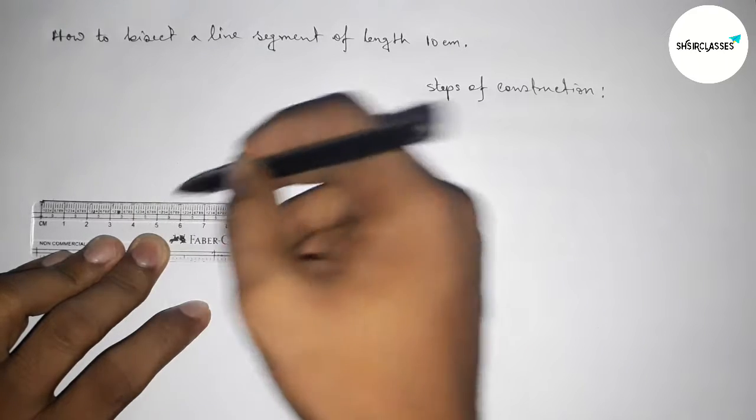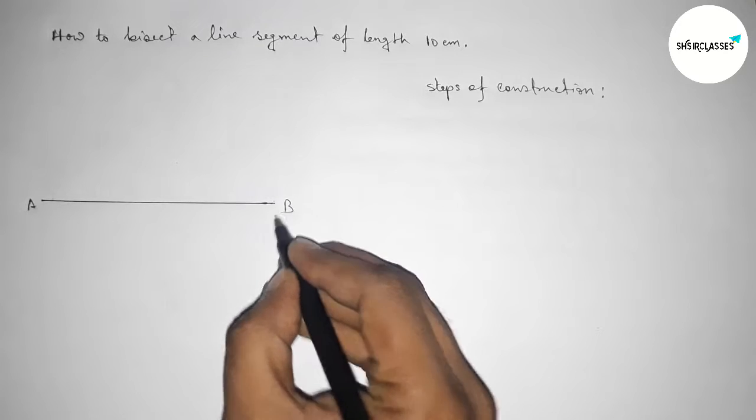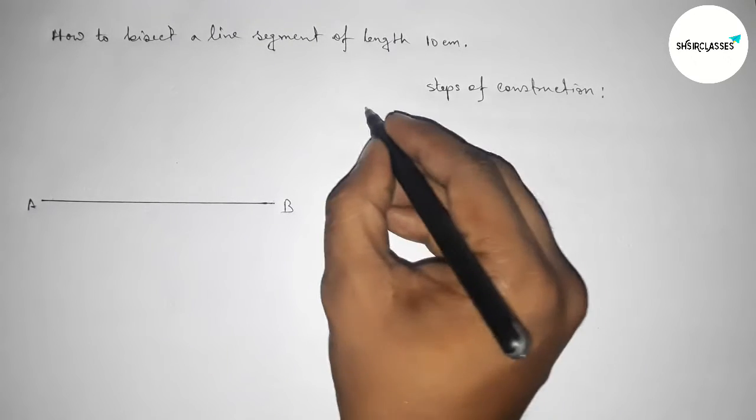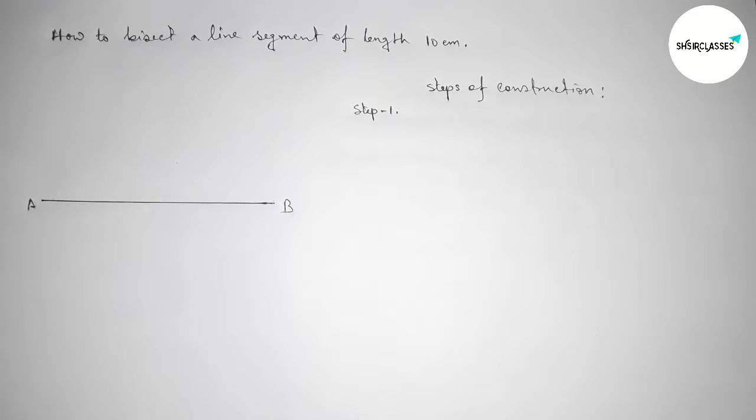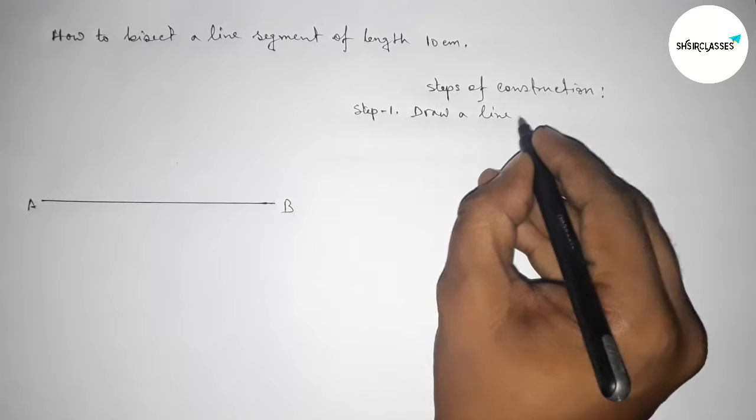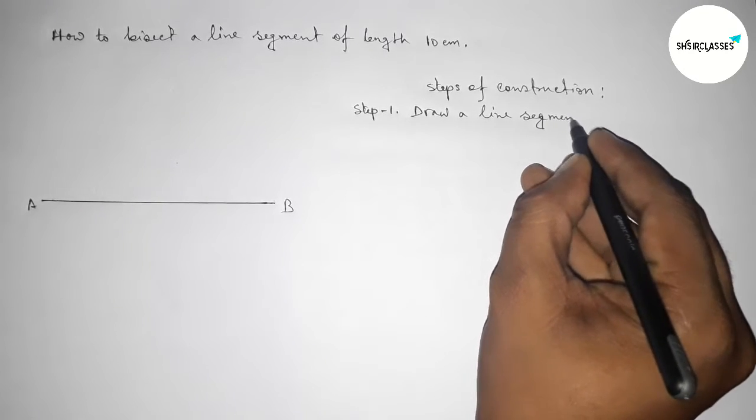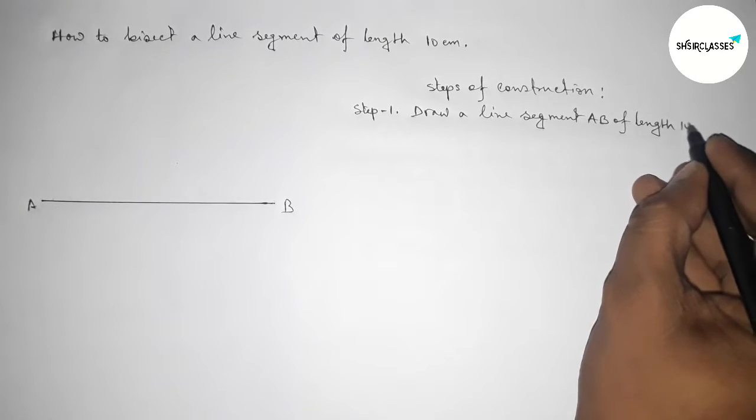Taking here A and here B. So step number one. In step number one, we have to first draw a line segment AB of length 10 centimeter by using scale.